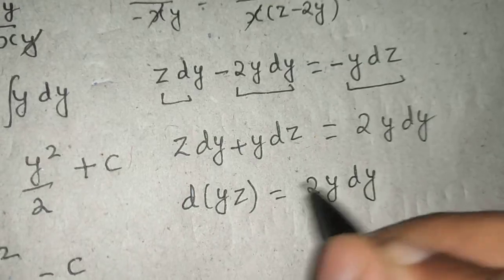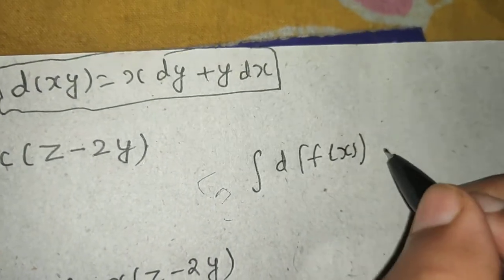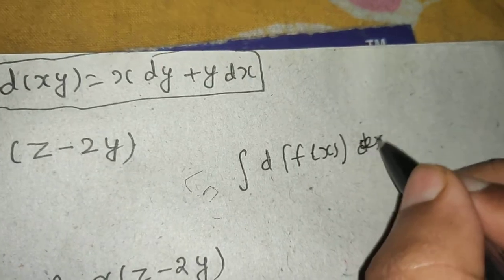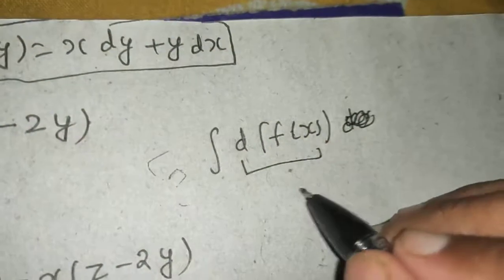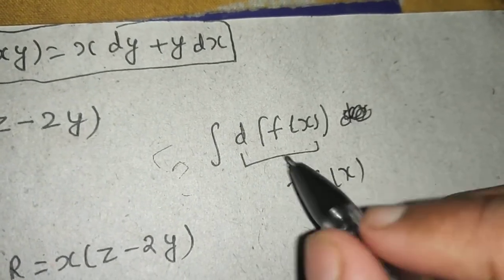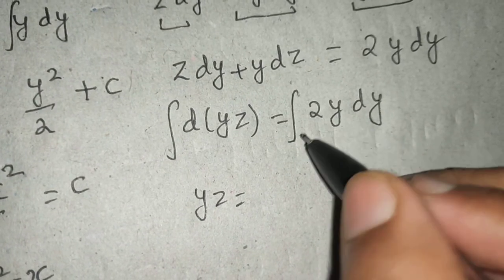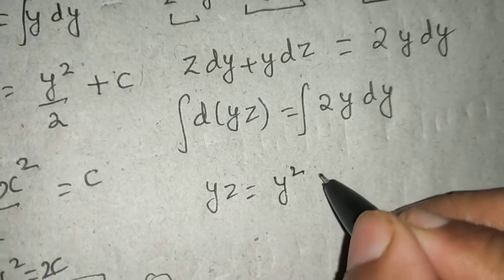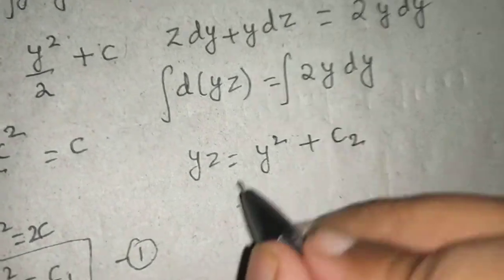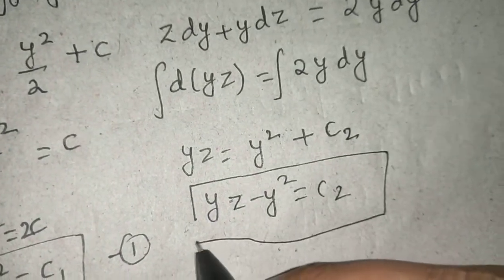Now if you integrate both sides, integration of d(fx) you will directly get whatever is inside, that means fx. It's that simple, just d is removed. So yz = integration of y is y²/2, the 2s cancel. yz - y² = c₂. This becomes your equation number two.